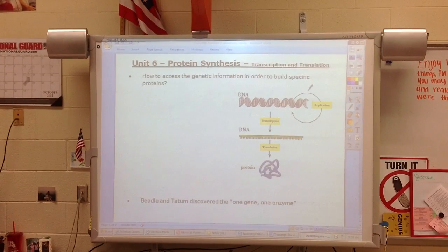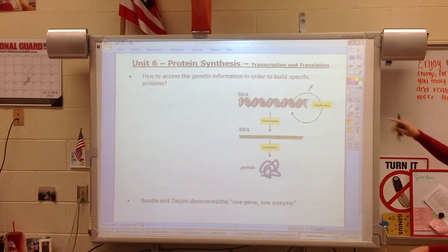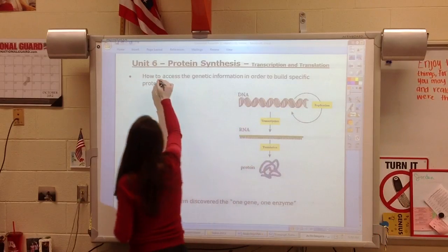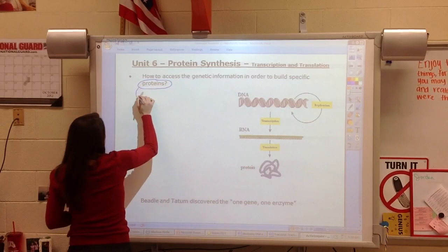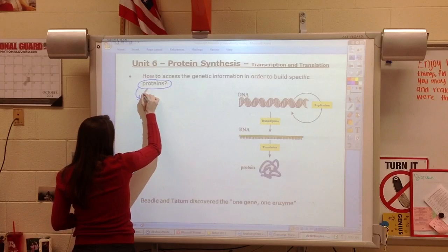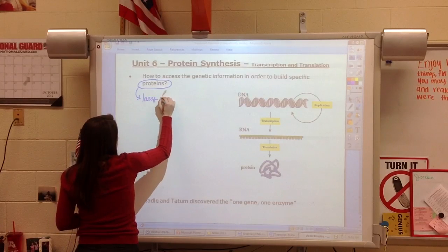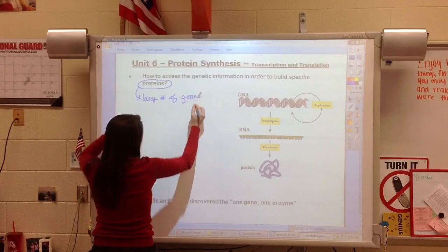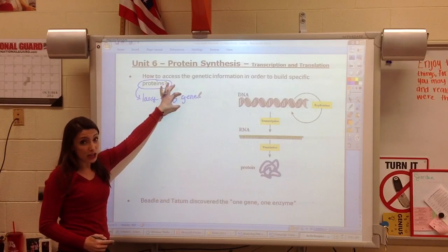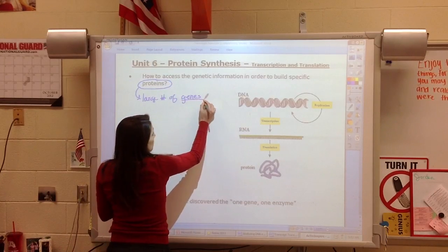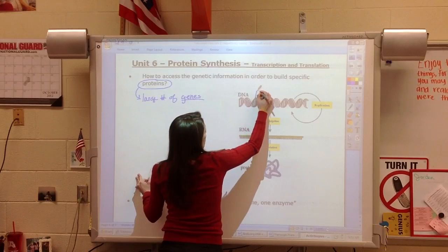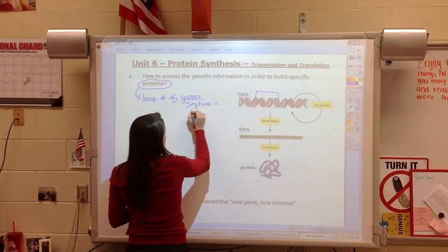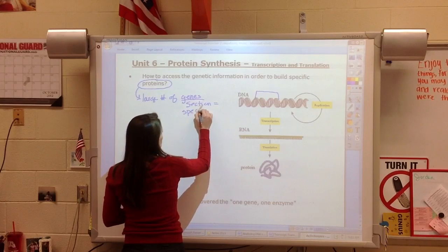The purpose of DNA is to be able to build specific proteins. The DNA is going to have the code to build a very large number of proteins. And we're going to begin using the word gene to describe a section of DNA that has a specific code.